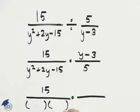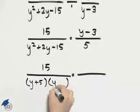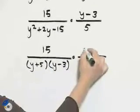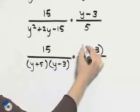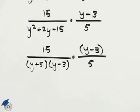The denominator factors into y plus 5 times y minus 3. The numerator of the second fraction is already factored, and the denominator is just 5.